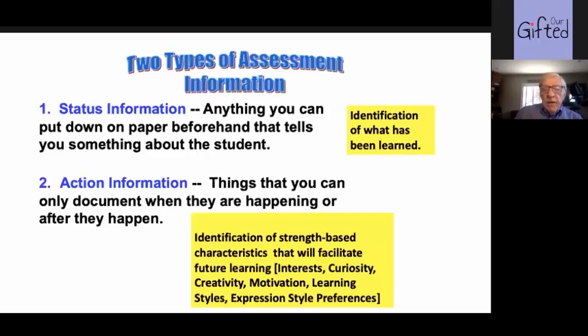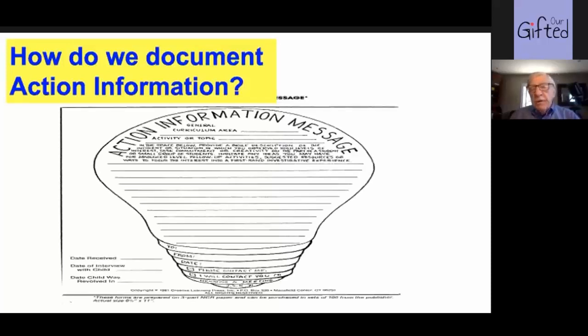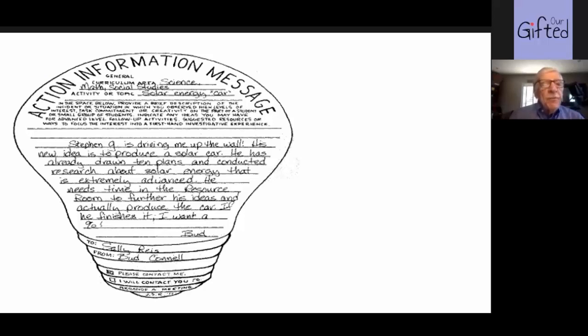One time I was asked, how do we measure action information? One of the things included in our work is a thing called the action information form. These are ordinarily sent from one teacher to another or sometimes an outside mentor. To give you an example: 'Stephen G is driving me up the wall. His new idea is to produce a solar car. He has already drawn 10 plans and collected research about solar energy that is extremely advanced.' When the resource teacher in our school-wide enrichment program received this, she invited this young person in to work with her, even though he wasn't an officially identified gifted student, and she got him many resources including adult mentors. He eventually developed his car further and entered it in the state science competition.